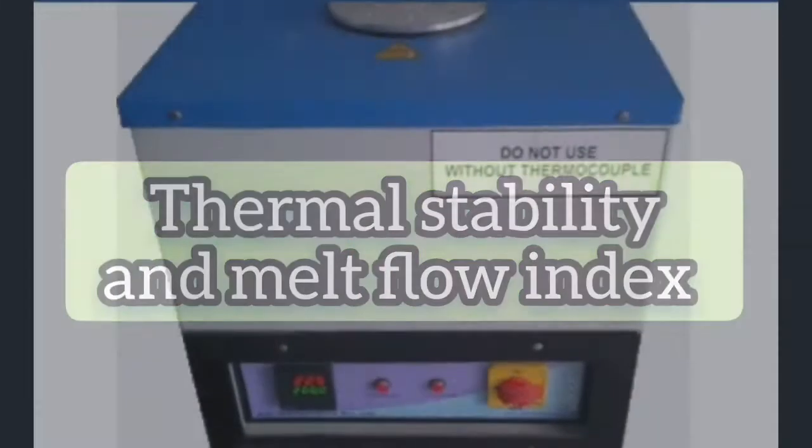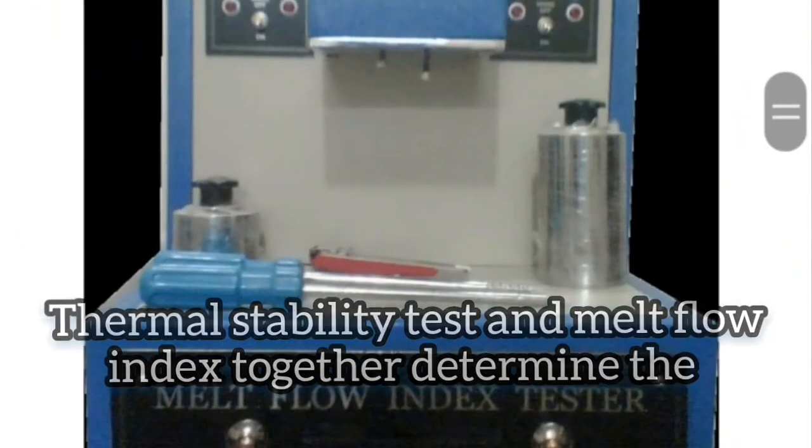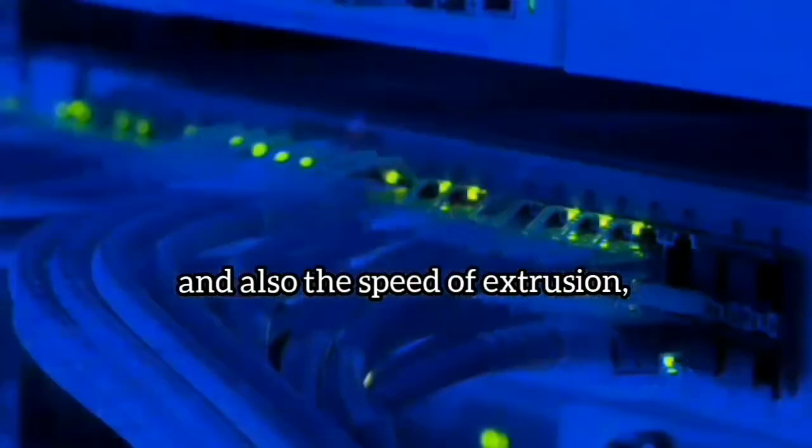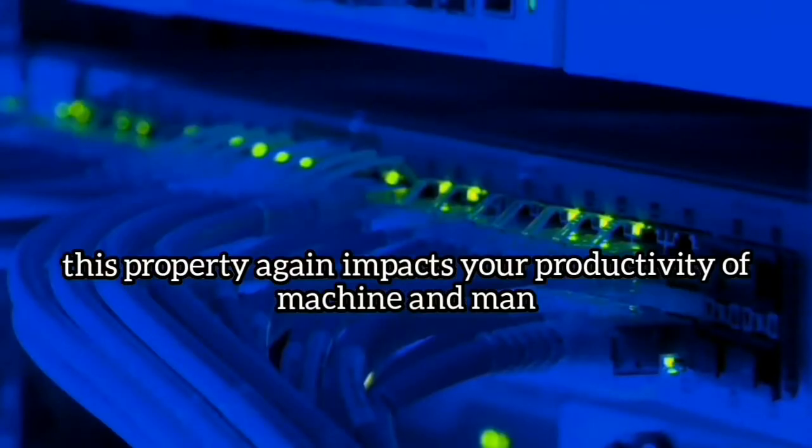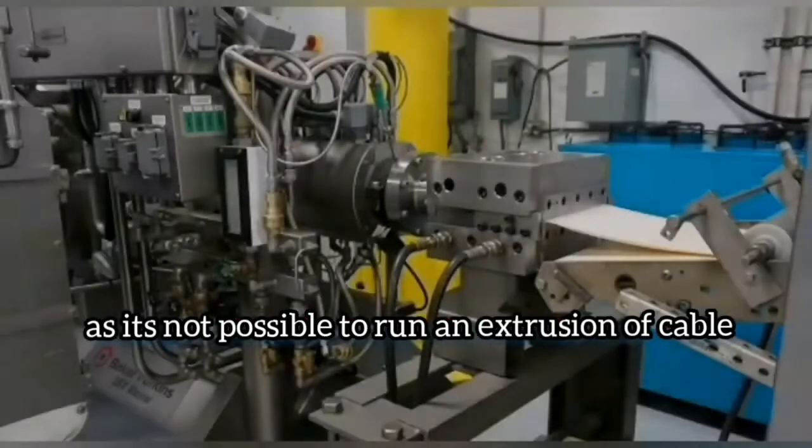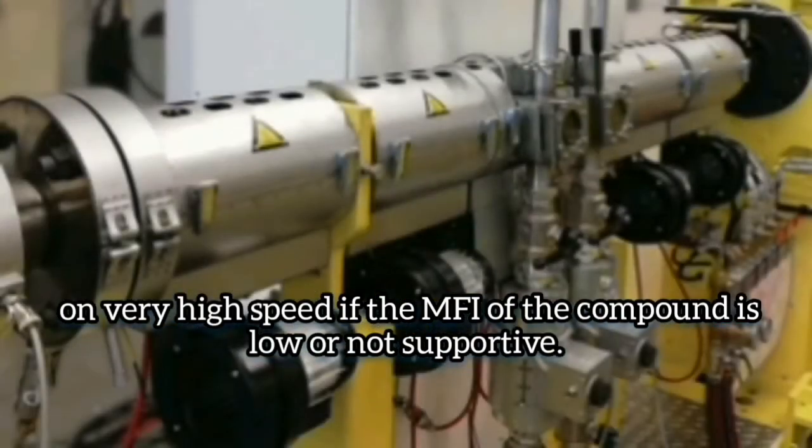Thermal stability and melt flow index: thermal stability test and melt flow index together determine the temperature profile of extrusion and also the speed of extrusion. This property again impacts your productivity of machine and man as it's not possible to run an extrusion of cable on very high speed if the MFI of the compound is low or not supportive.